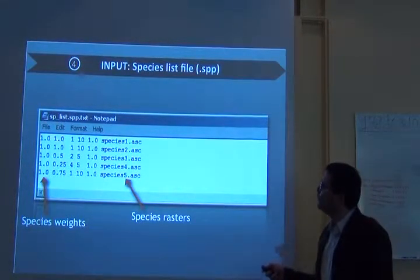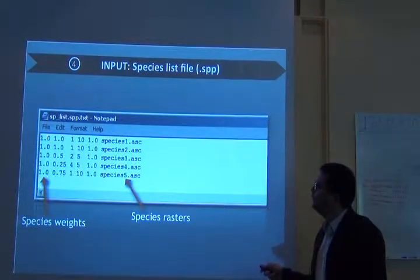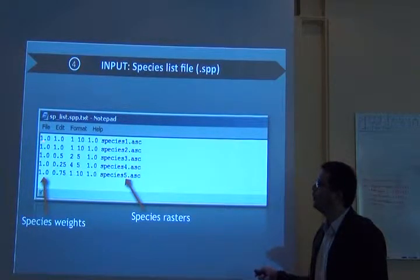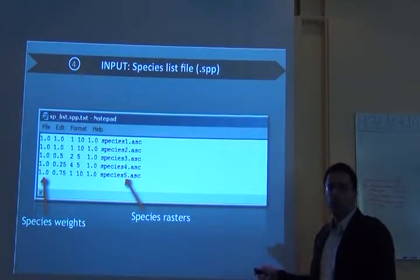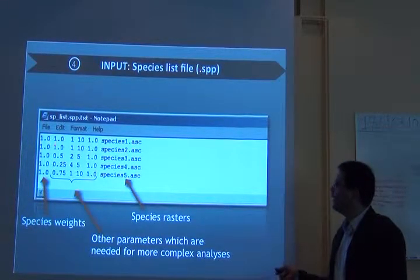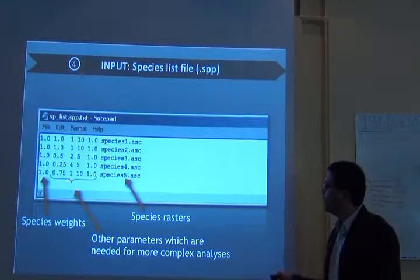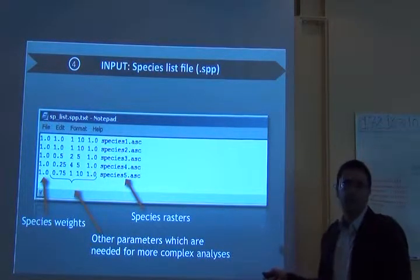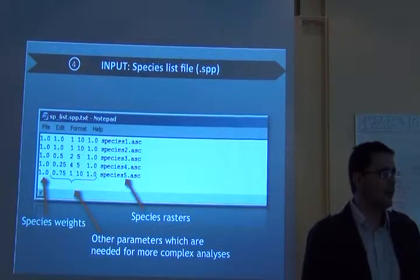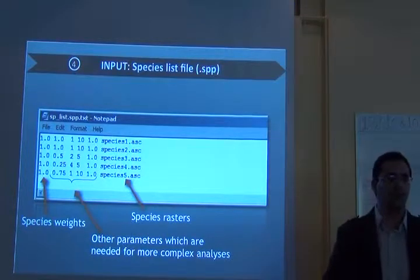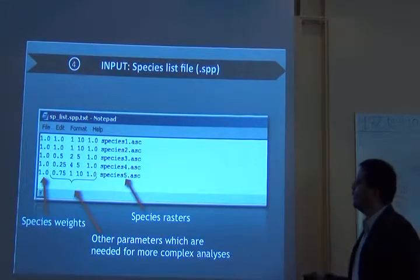And we have other parameters here for each feature. So in this very same species list file you can have the species weight. If you put one in this column it will mean that all species have the same weight. Or you can change the weight of the species here. Then you have other parameters that are needed for more complex analysis like considering species specific habitat connectivity or the quality of the neighborhood of that cell.